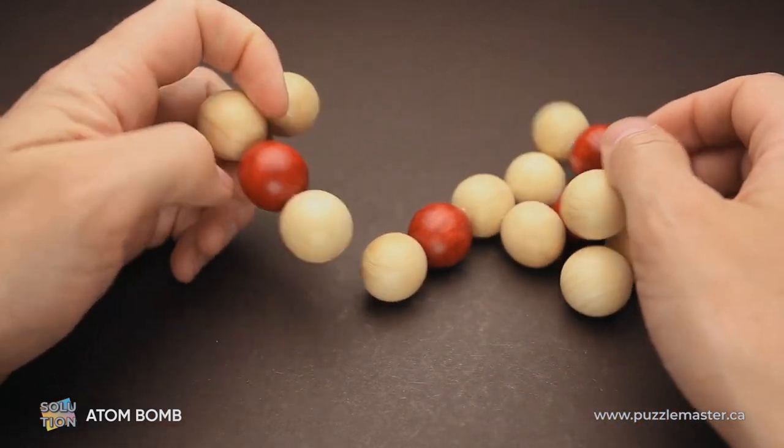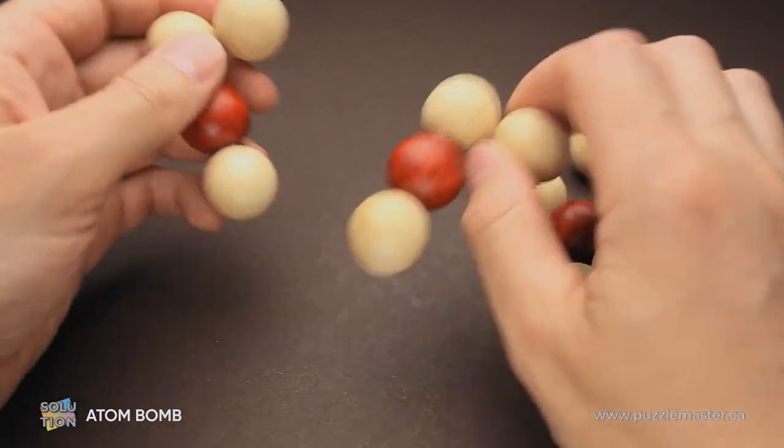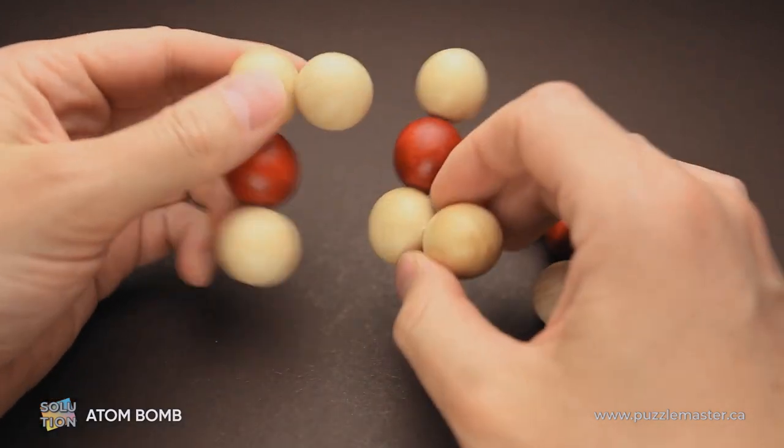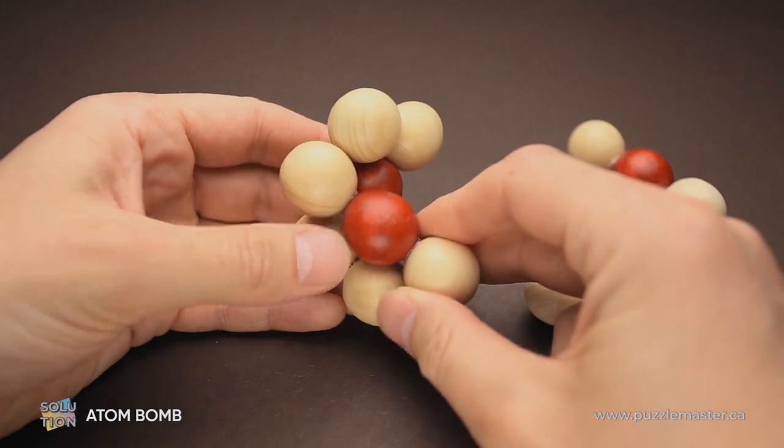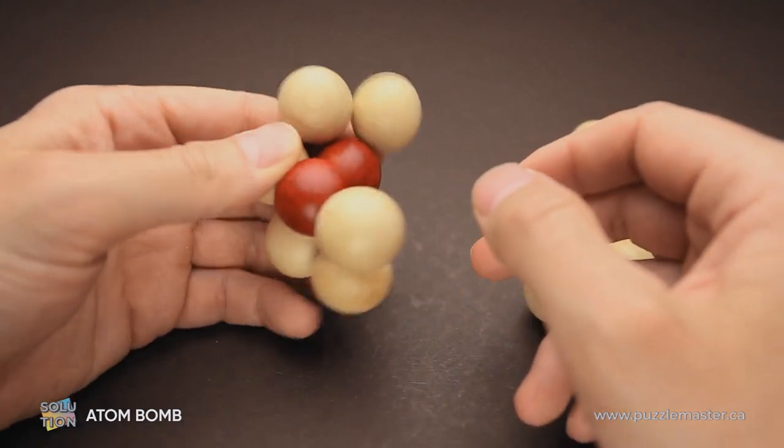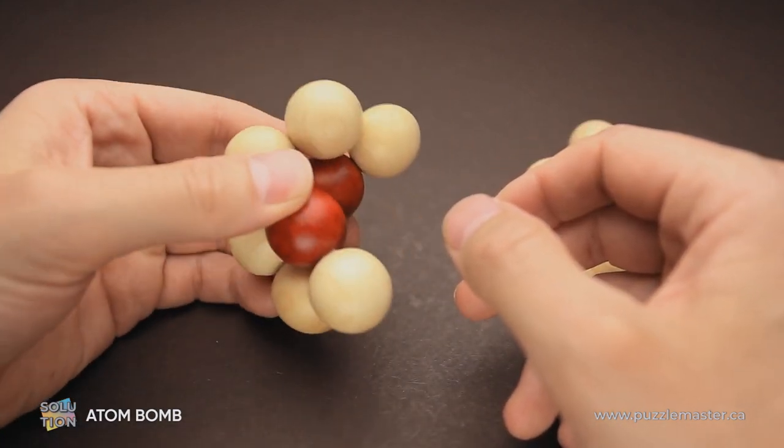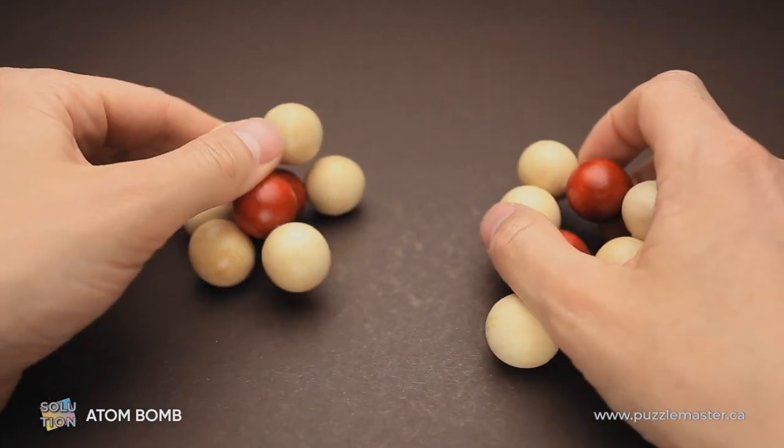And now I will show you how to solve the puzzle. First of all, grab any two parts, since the parts are exactly the same. So you have to grab any two and put one like that, another on top. You will feel that they already feel nice together. They fit perfectly.